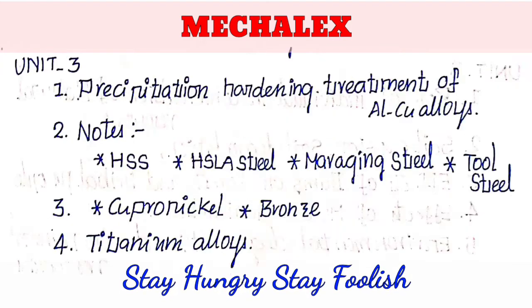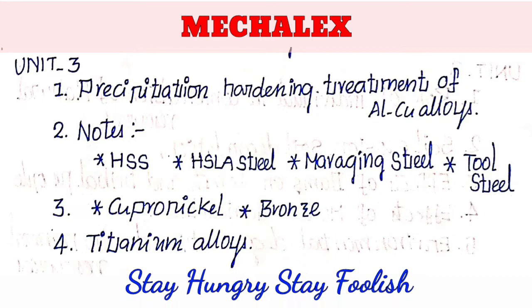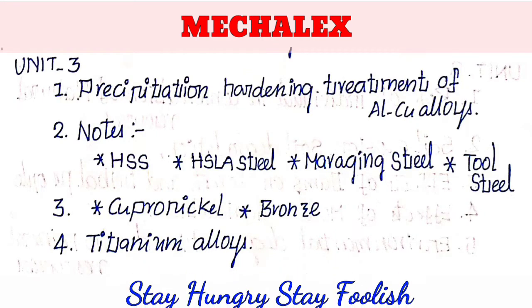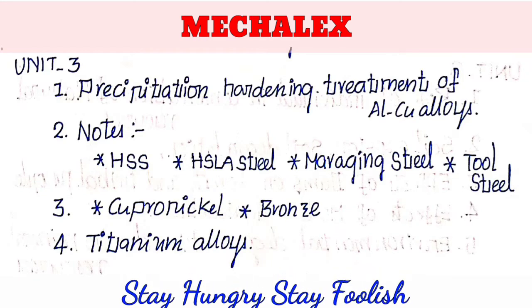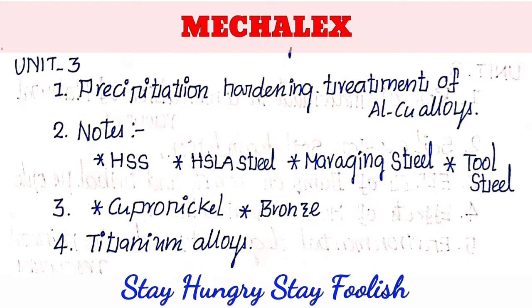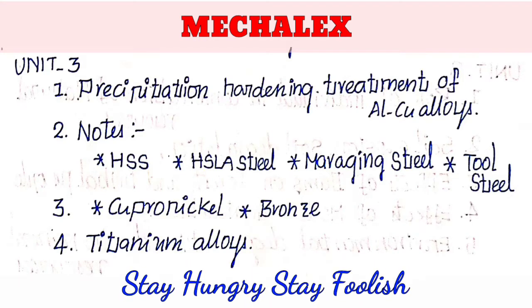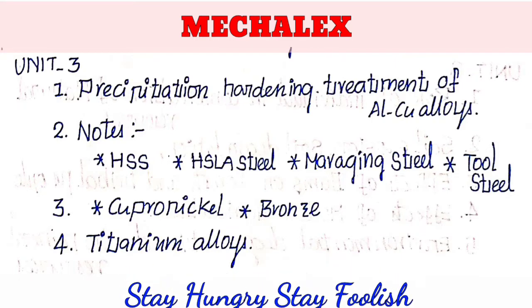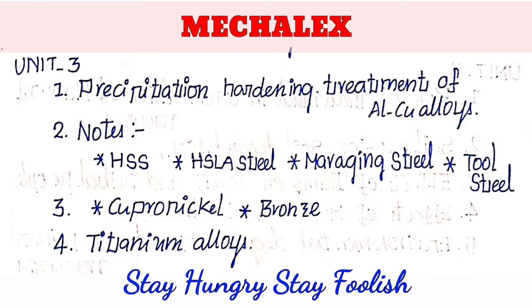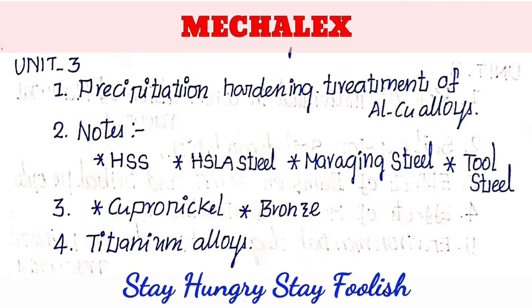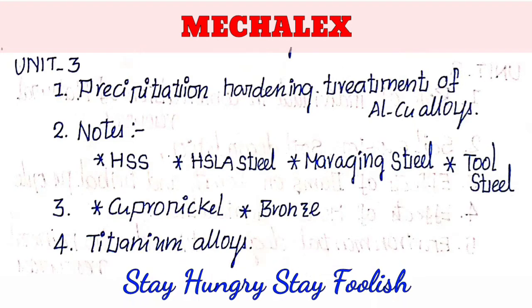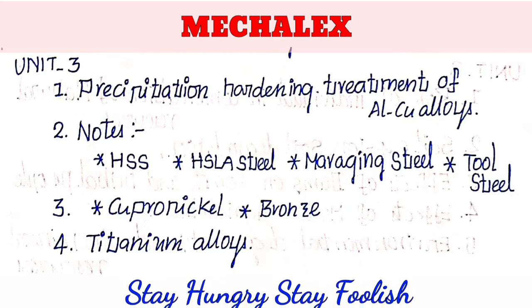In the third unit, there are four topics. First is Precipitation Hardening Treatment for Aluminum-Copper alloys. Second is: give your notes on the following four terms — HSS (High Speed Steel), LA Steel, Maraging Steel, and Tool Steel. This covers their properties and applications.